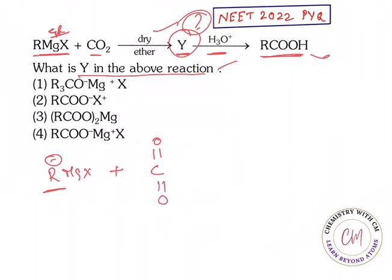This carbon with high electron density, R, will attack the carbon at the center of CO₂, which has less electron density. Why does this carbon have less electron density in carbon dioxide? Because there are two oxygens which are more electronegative, so electron density shifts towards the oxygens. The center carbon in CO₂ becomes electron-deficient, meaning it becomes an electrophile. So the nucleophile R attacks this electrophilic carbon in dry ether.